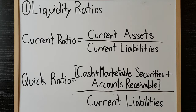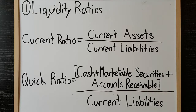Essentially, we are comparing assets that will be realized in the short term with liabilities that will mature in the short term. If the current ratio is less than one, it's a little concerning because it indicates the company does not have enough assets to pay its short-term liabilities as they become due.